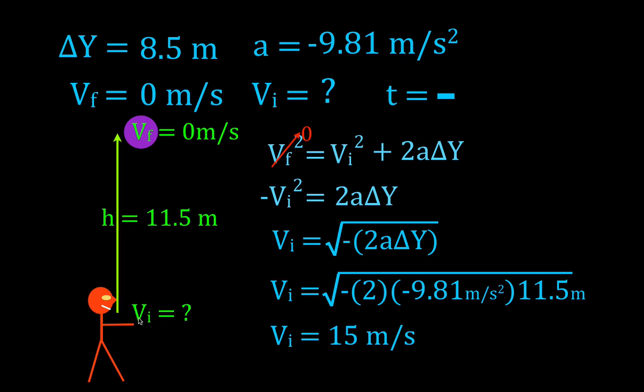If any object is projected straight up into the air in free fall, which basically means we're ignoring air resistance, if it's projected straight up in the air with an initial velocity of 15 meters per second, then it would reach a height of 11.5 meters.